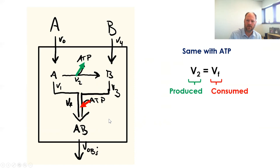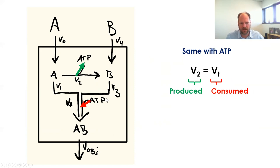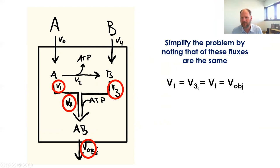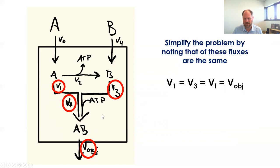We can simplify this flux problem by collecting up all the terms that are the same and defining the equivalency. In this case, V2, V3, Vf, and Vob must all be the same — because V3 flows into Vf, V1 flows into Vf, and Vob flows out. For AB to stay in equilibrium, all these rates must be equivalent.